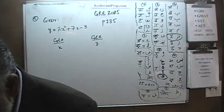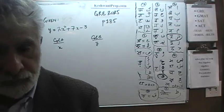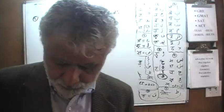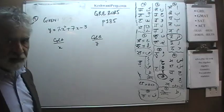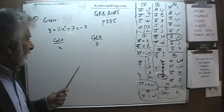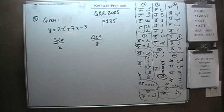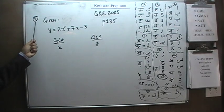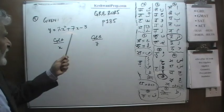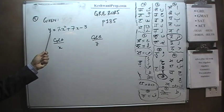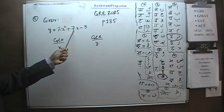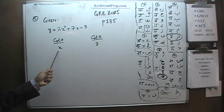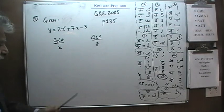Today we will solve two very simple, very straightforward problems that you will find on page number 185. The very first problem, as you can see, is already on the blackboard — number 5 on page 185. We are told that y is equal to 2x squared plus 7x minus 3, and we are simply asked to compare x and y.